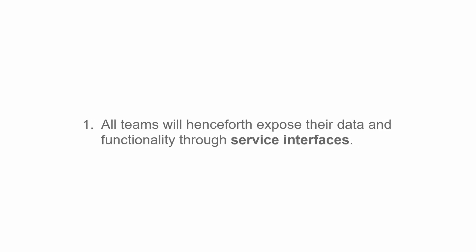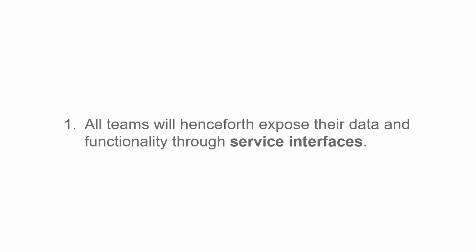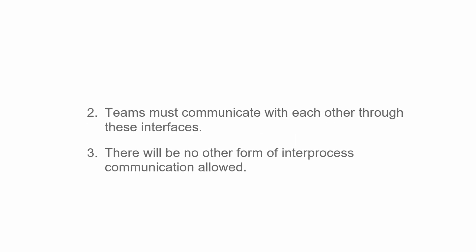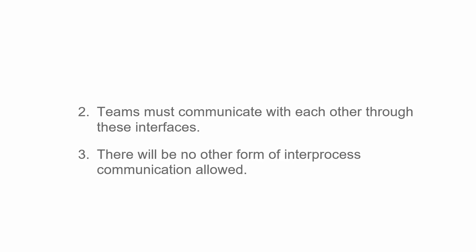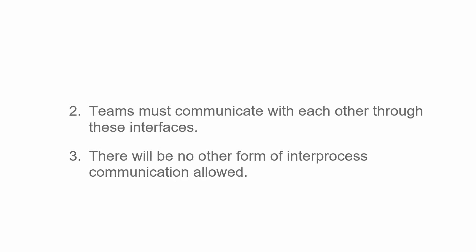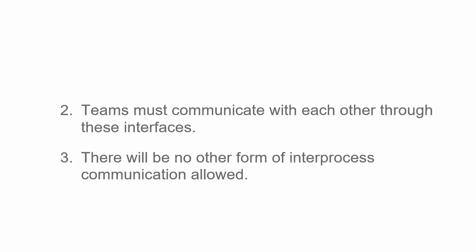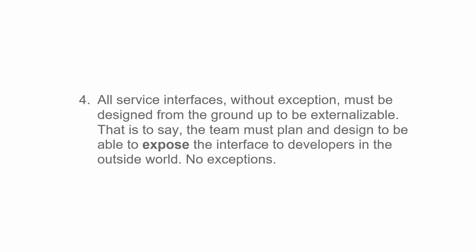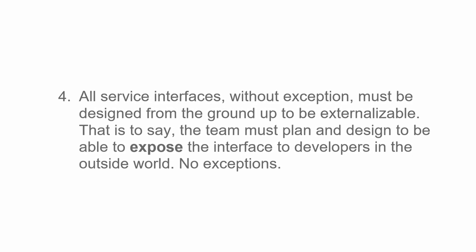His first bullet point: 'All teams will henceforth expose their data and functionality through service interfaces' — basically just saying that teams need to be clear about what they can do for other teams. The next two bullet points — that teams must communicate with each other through these interfaces and there will be no other form of inter-process communication allowed — are basically saying there's no secretly going behind someone's back in another team to get them to do the job for you. Every team needs to be able to share their resources with every other team, and also the public if Bezos decides to take that department public. The final bullet point is basically just saying that Bezos has plans to make each team externalizable — meaning he can take any team public.